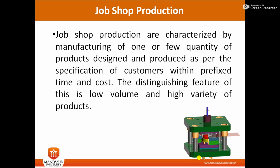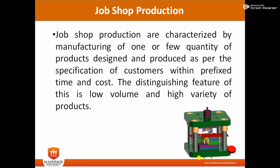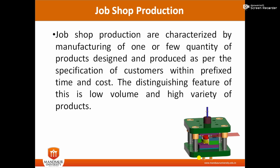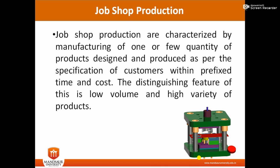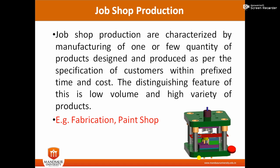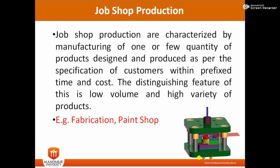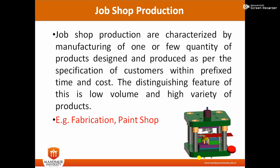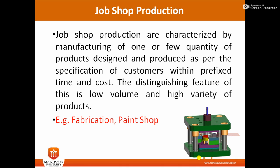Job shop production is basically customer specific. For example, if a customer wants a Bugatti variant, it is designed as per the customer's specification and requirement, and the color of that particular car is decided by the customer itself. This is called job shop production, where the customer's intention and demand is more focused. Fabrication work also depends on the customer's specification — we are producing a variety of products rather than a single type.